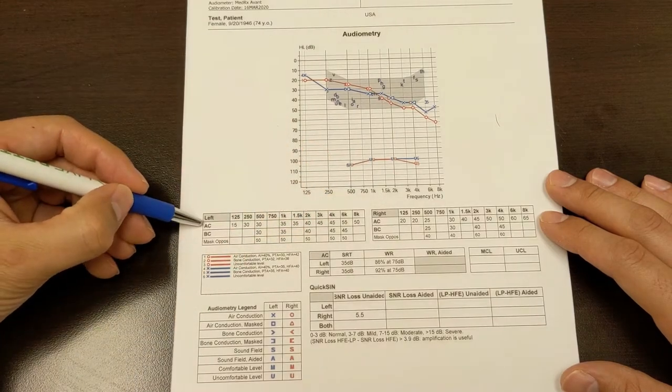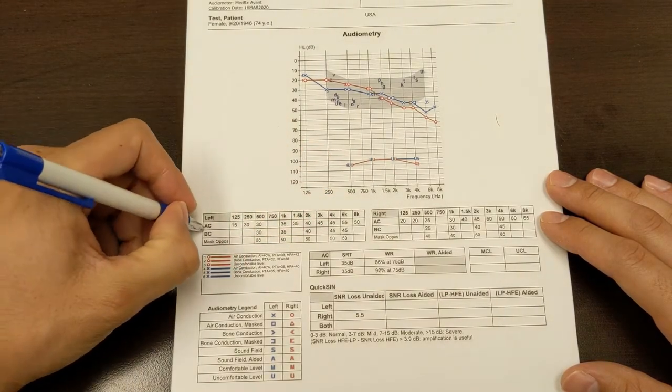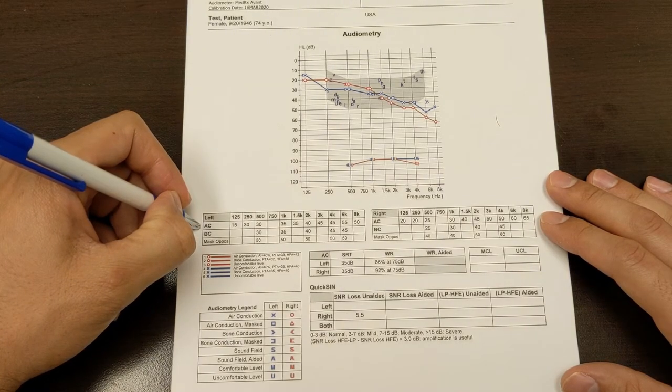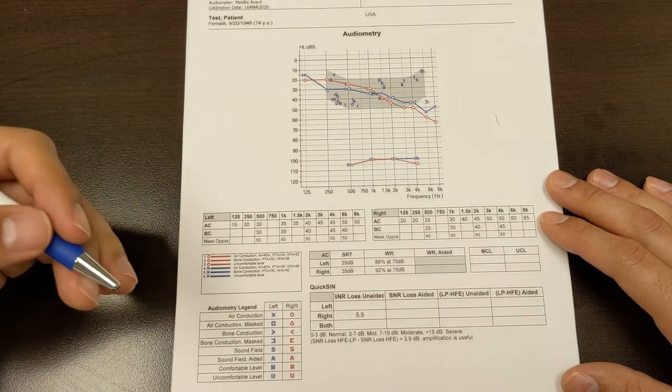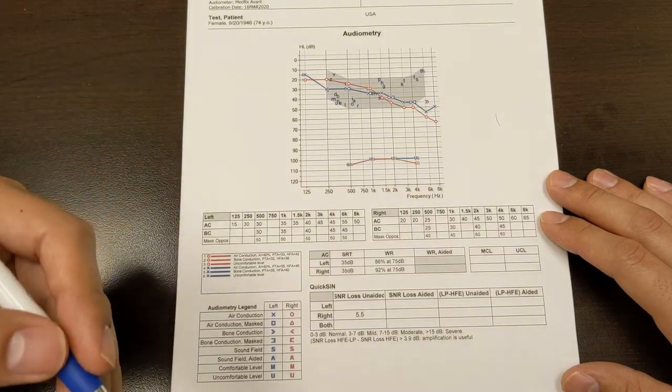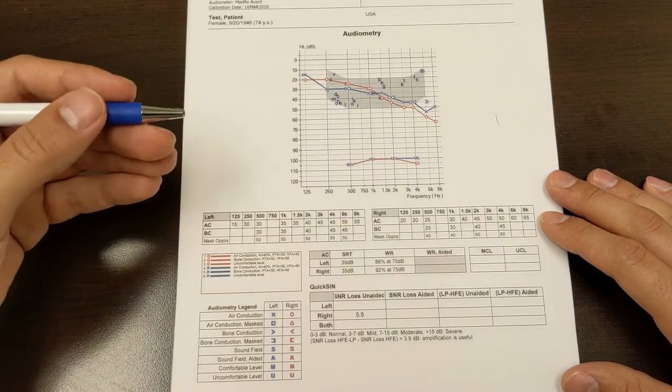And there's AC. So AC is air conduction. And that's how we're hearing normally without anything on our ears. Air waves are passing through the air, it's displacing the air, and then it's hitting our eardrum. It's going to our middle ear, it's going to our inner ear.